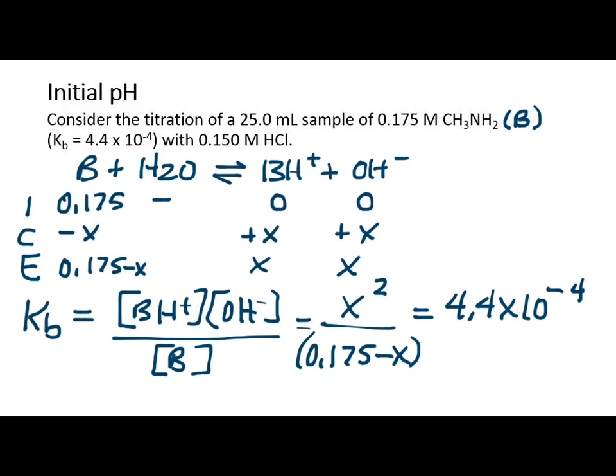This is standard equilibrium calculation. Since we have our lovely calculators that solve quadratics for us, I prefer to just plug it in and not worry about the X is small approximation. So I'm just going to put this into my solver. Let me double check. And then I'm going to solve for it. I come up with X equals 8.558 times 10 to the minus 3.